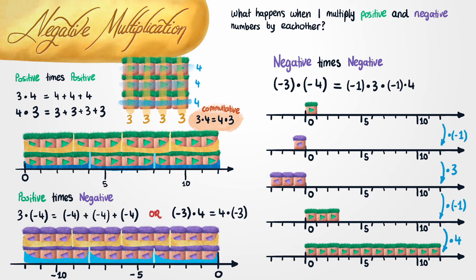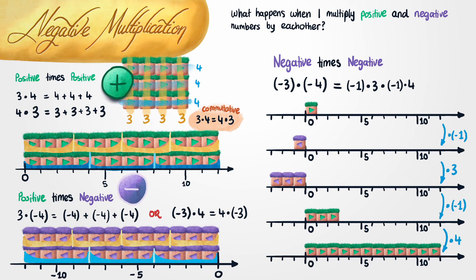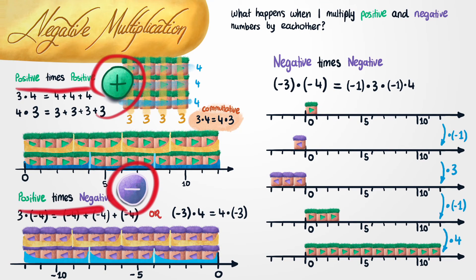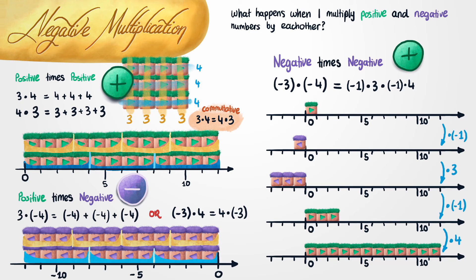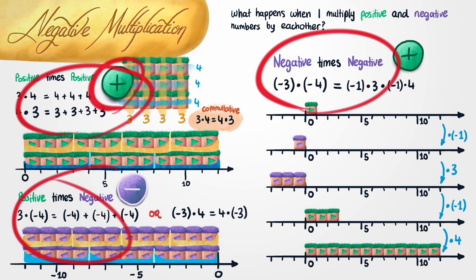Let's summarize everything. When you multiply a positive number by another positive number, you end up with a positive number. When you multiply a positive number by a negative number in either order, you always end up with a negative number. And we're forced to conclude that a negative number times another negative number has to be positive. If you have an even number of negative numbers, you always end up with a positive answer. If you have an odd number of negative numbers, you end up with a negative answer.